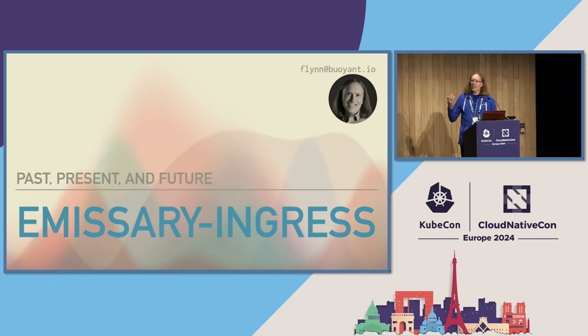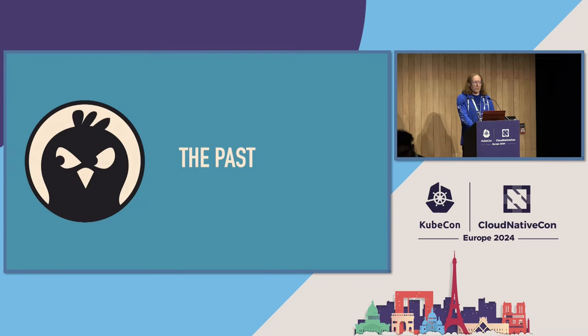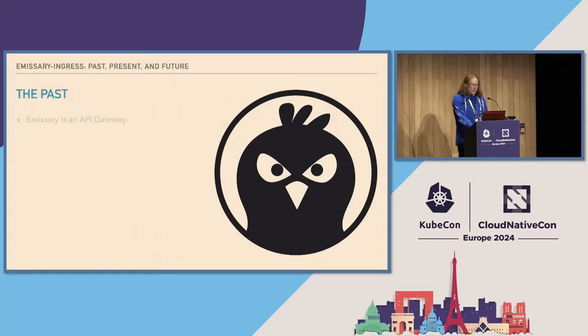We are here to talk about Emissary — the past, the present, and the future. We will of course start with the past. Quick show of hands: how many of you are new to Emissary? So this is going to be a little bit interesting. Let me go through this deck, and then if you like, I'll pull up another one where we can go into a little more detail about how Emissary works. The quick summary is that Emissary is an API gateway. It is an open source gateway.